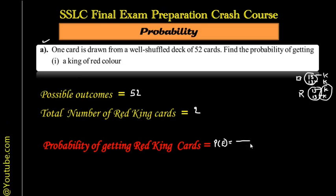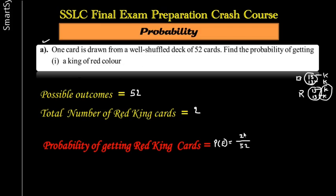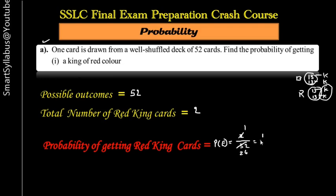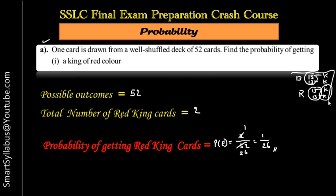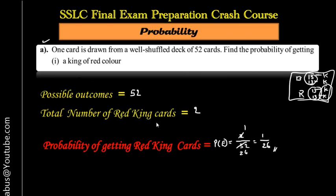Total number of red king cards is two. Probability of getting a red king card: P(E) = favorable outcomes / total outcomes = 2/52. Simplifying: divide both by 2, giving 1/26. The final answer is 1/26. Notice the answer is less than one, which confirms it is a valid probability. Understanding the card structure makes these sums very easy.